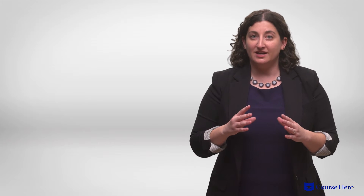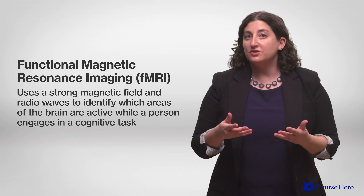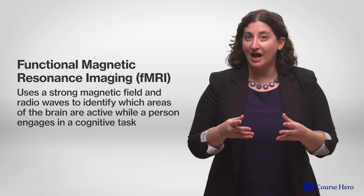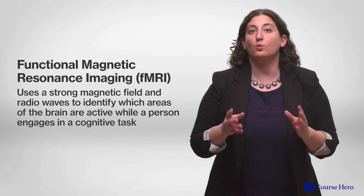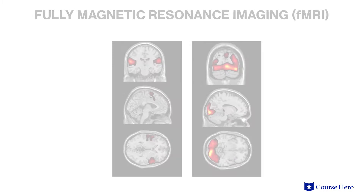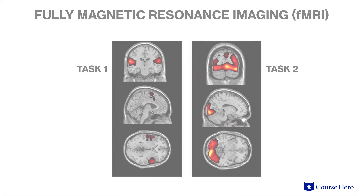Like MRI, fMRI, or functional magnetic resonance imaging, also uses a magnetic field and radio waves, but it can track changes over time to identify which areas of the brain are active during a specific task. Like PET scans, this relies on the idea that local blood flow increases to areas of the brain that are active. PET and fMRI are both great but expensive techniques. More approachable for many researchers are EEGs and ERPs.